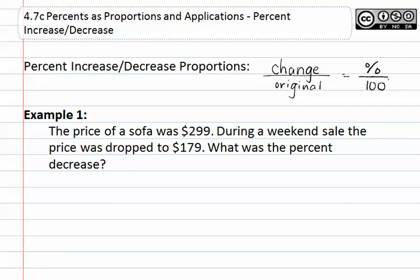Let's see this in example one. Example one asks, the price of a sofa was $299. During a weekend sale, the price was dropped to $179. What was the percent decrease?